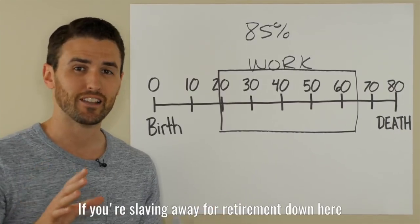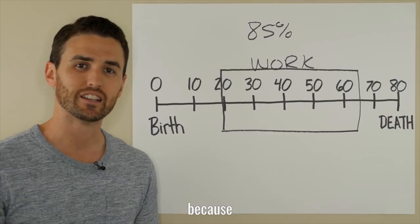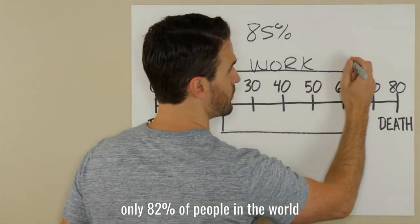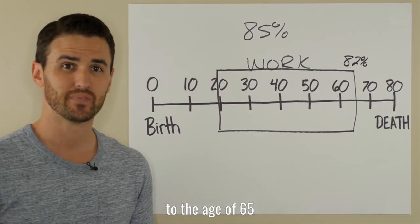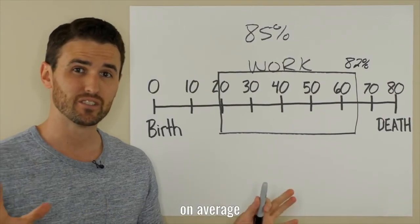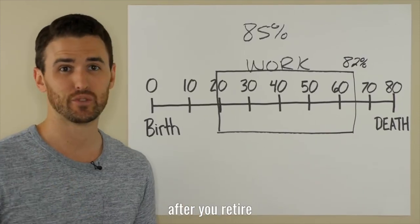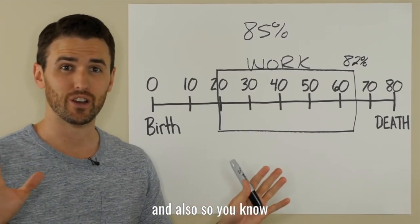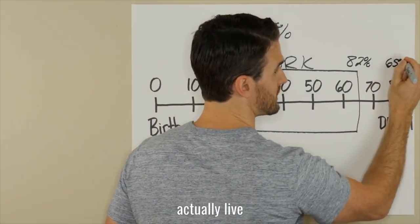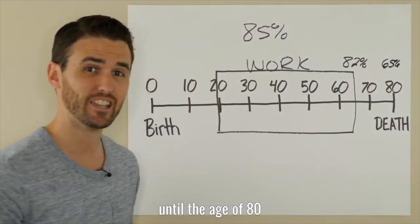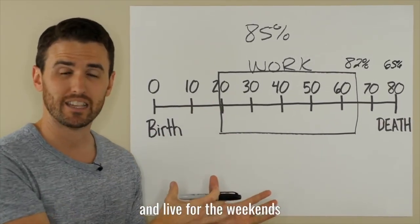And just so you know, if you're slaving away for retirement down here, you're missing the point. Because only 82% of people in the world will actually live to the age of 65. And if you get to 65, on average, you only have about 15 more years left to live after you retire. And also so you know, only 65% of people actually live into the age of 80. So don't stay at a job where you dread Mondays and live for the weekends.